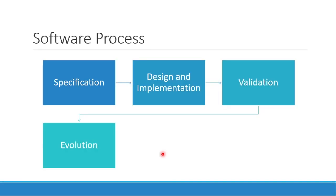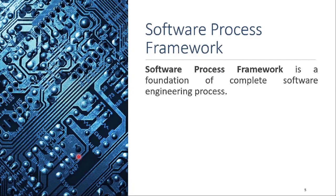In the last lecture we saw that any software process must have four phases. These are the four main phases that will be a part of any software process: specification, design and implementation, validation, and evolution. In specification we define what the system is going to do. In design, how we are going to make the system. In implementation we actually code our system. In validation we verify whether our system is doing what it was supposed to do. And in evolution we maintain our system and add updates.